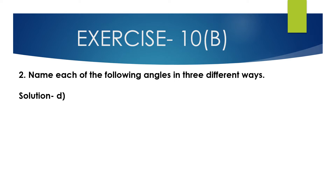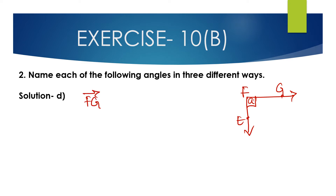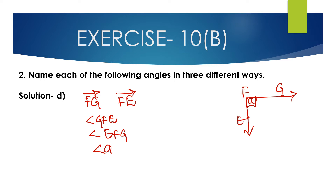Now part D. The figure is given with points E, A, F, and G. Here FG and FE are 2 rays. The angle formed from these 2 rays can be named as angle GFE, angle EFG, and angle A. These are the 3 different ways of naming this angle using rays FG and FE.